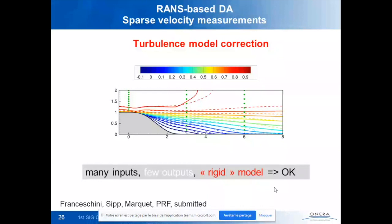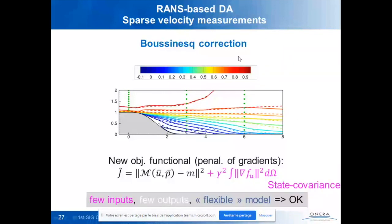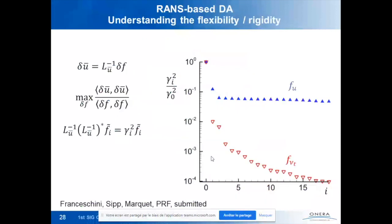The Boussinesq correction can still be cured by introducing a state covariance regularization — penalizing gradients based on physical knowledge that Reynolds stress terms should not have wiggles. This physically-motivated penalty on f_u cures the oscillation problem and makes the Boussinesq correction competitive even with sparse measurements.